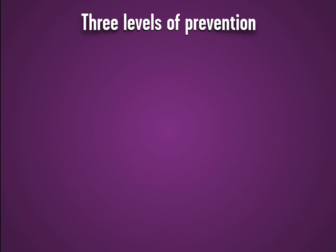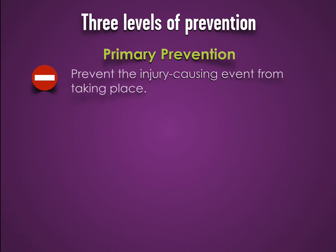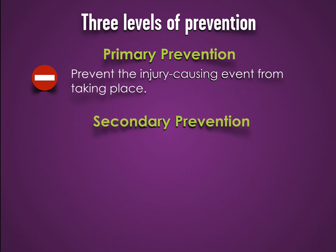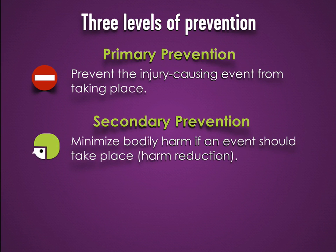We can speak of three levels of prevention. Primary prevention: prevention of the injury-causing event, such as fencing around swimming pools. Secondary prevention: minimizing the bodily harm in an injury-causing event, such as wearing protective equipment while participating in sports.